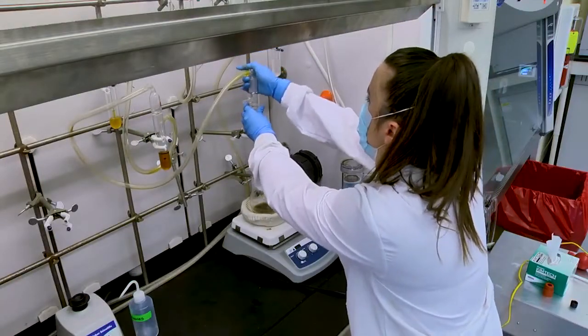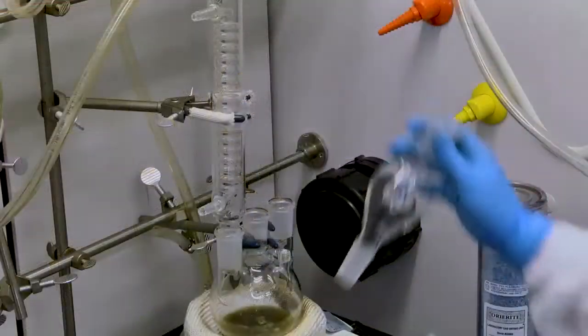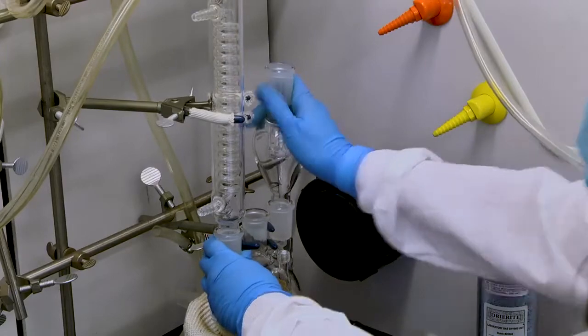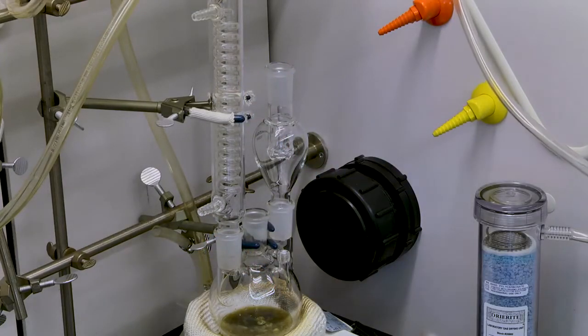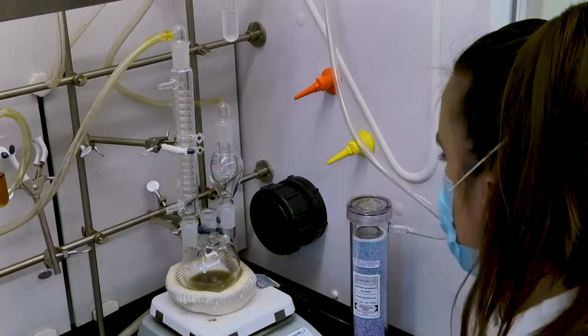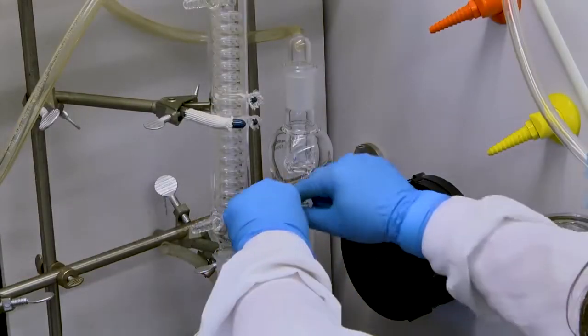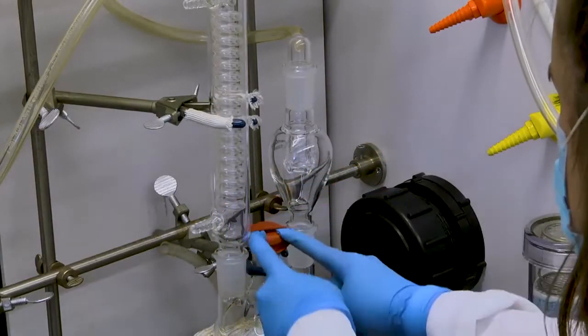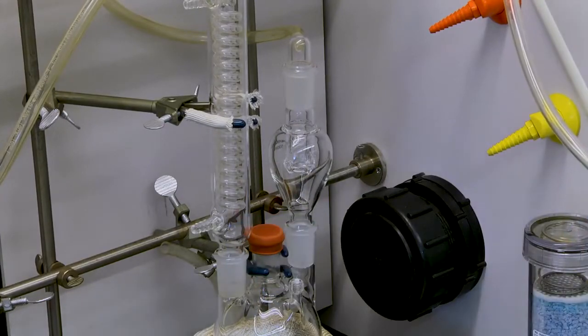Add the glass elbow adapter to the top of the condenser and attach the rotovap trap to the right neck of the round-bottom flask. Place the glass elbow adapter on top of the rotovap trap, and fold the rubber stopper on the middle neck of the round-bottom flask so the sides cover the neck of the flask.